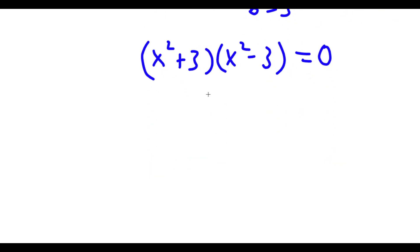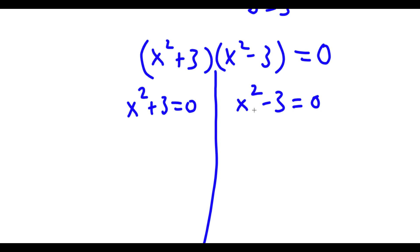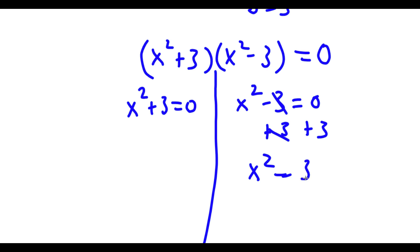So now this actually gives me two equations. I have x squared plus 3 is equal to 0, and I also have x squared minus 3 is equal to 0. Let's first start with x squared minus 3 is equal to 0. To solve this, I'm going to be adding 3 on both sides, so these two cancel out.